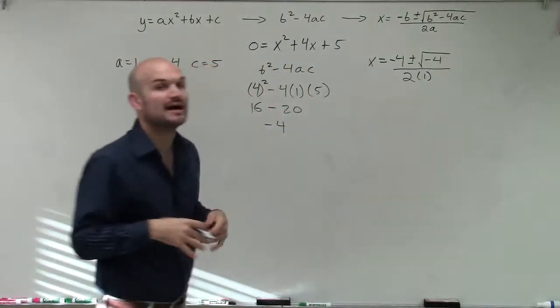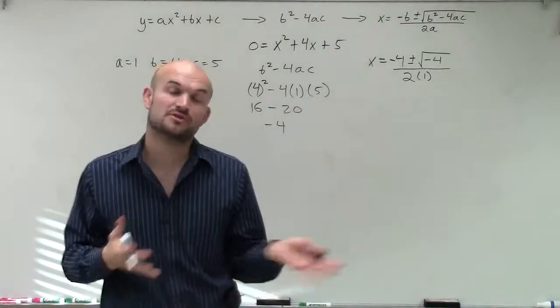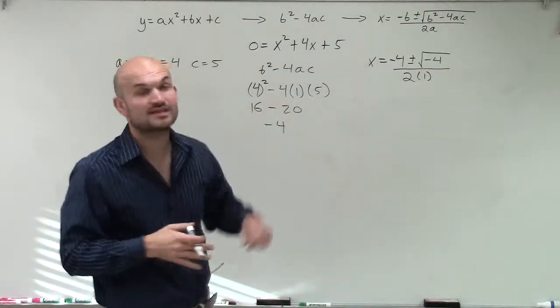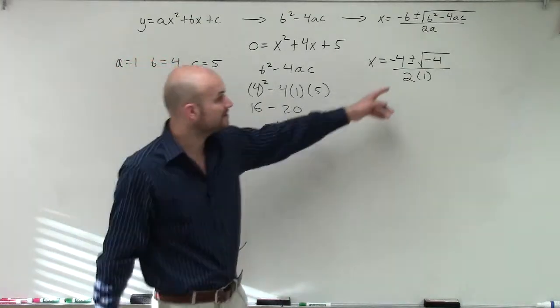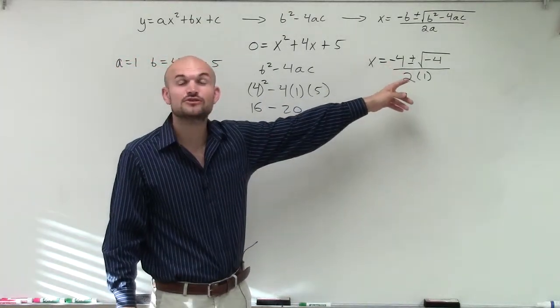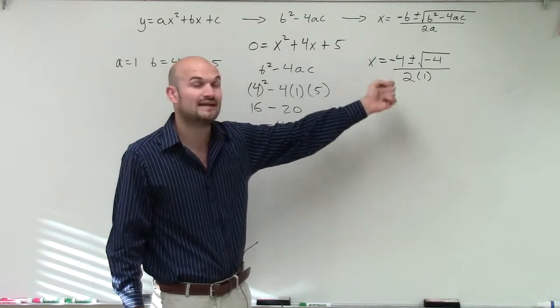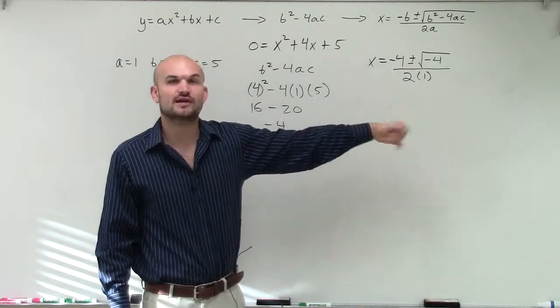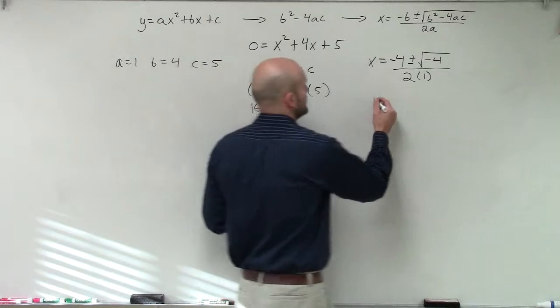Now, by using our complex numbers or imaginary numbers, we can simplify the square root of negative 4 by taking the square root of it, and then taking the square root of negative 1, breaking up into negative 1 and 4, and taking the square root of negative 1 and representing that with i.